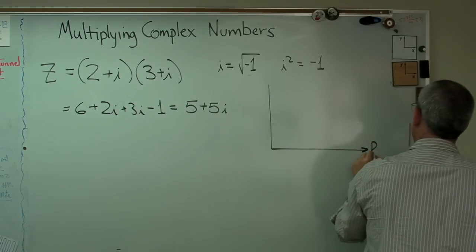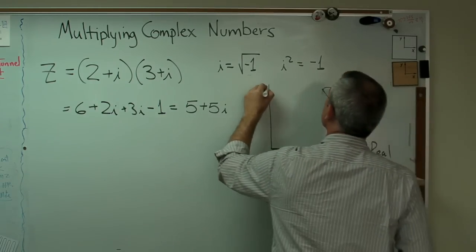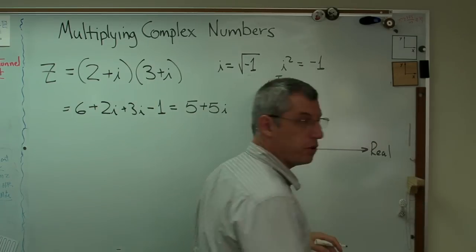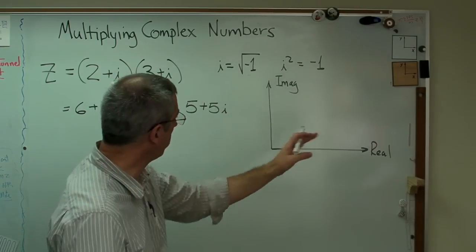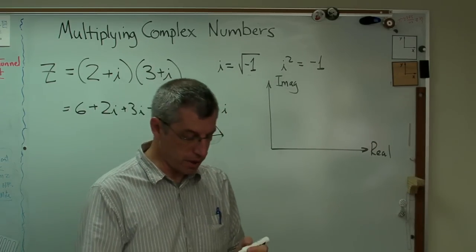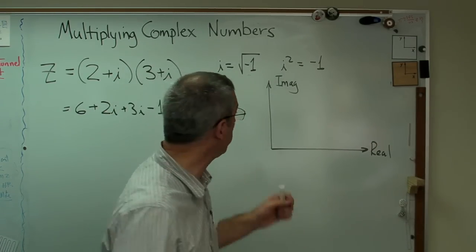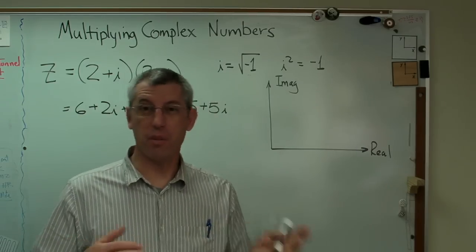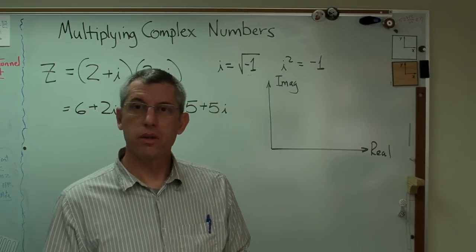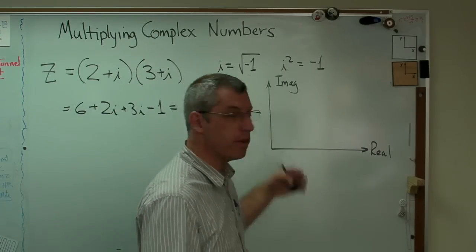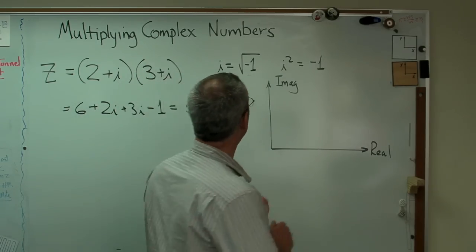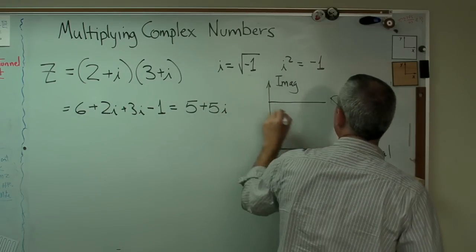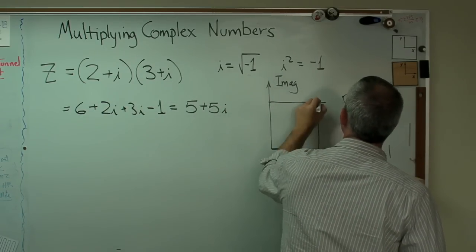If I can't draw a picture of a mathematical problem, that always bothers me a little bit. So let's do this. Let's draw these coordinates here. There's real and imaginary. Those are our two axes now, instead of x and y. We've got real on one axis and imaginary on the other.